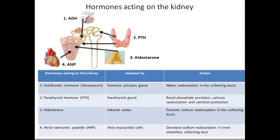The second hormone acting on the kidney is parathyroid hormone. Parathyroid hormone is produced from the parathyroid gland. It has a few actions within the kidney: the first action is to inhibit reabsorption of phosphate, the second is to promote reabsorption of calcium, and the third action of parathyroid hormone is involvement in the formation of vitamin D.